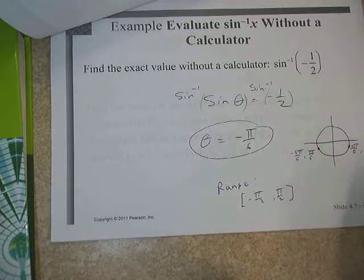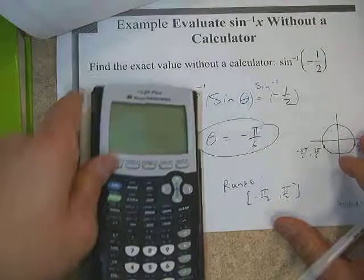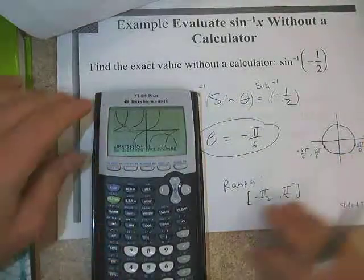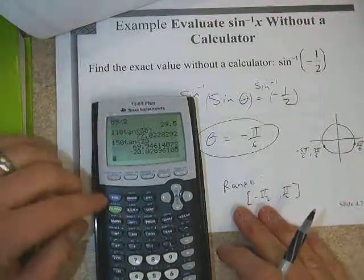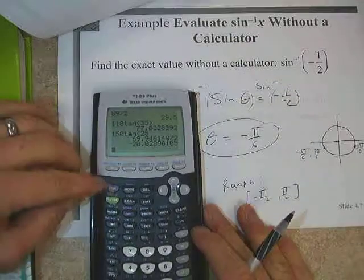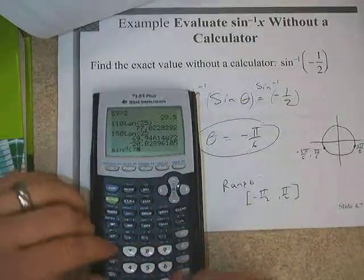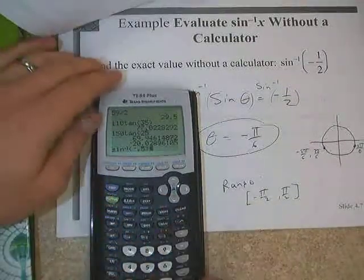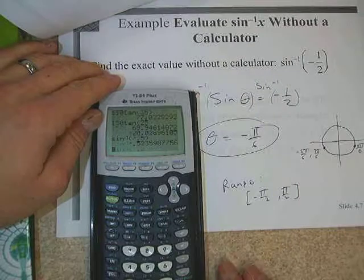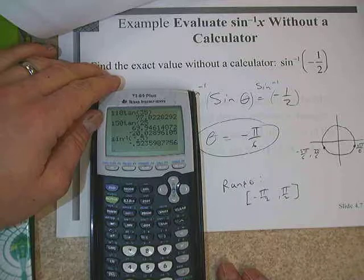The key issue is finding the two positions on the unit circle that are valid. With sine and cosine, there are always two possible positions. If the normal positive angles at those positions don't work, try the negative angles — go around the other way at those same positions. One of those four angles should work.